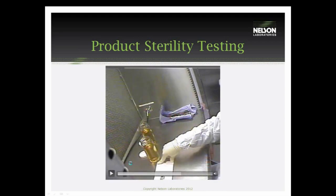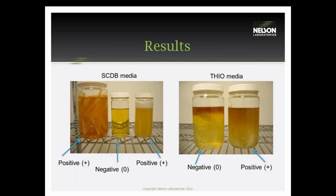Following the testing, we will score the jars for growth. You can see from the slides what a positive would look like for each media type. We are looking for no growth here. What we need to accomplish for a batch release is complete kill on the half cycle, so any growth in the media is going to directly impact the batch release — it will stop it in its tracks. We definitely need no growth here.